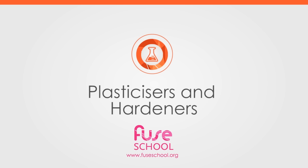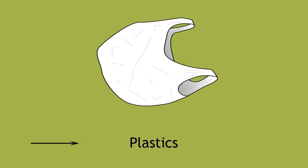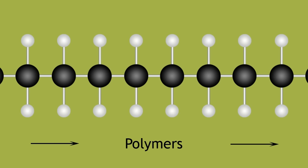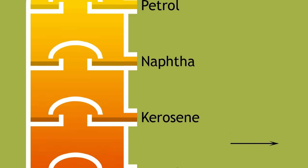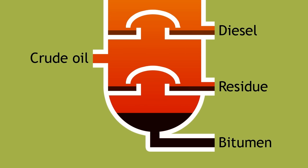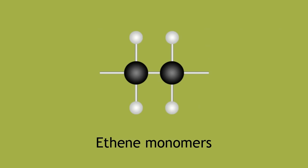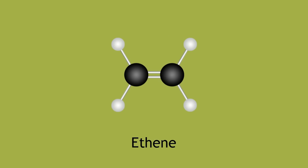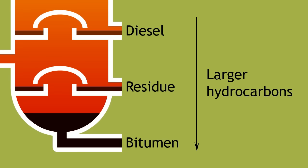In this lesson, we will learn about plasticizers and hardeners. You may be familiar with the term plastics to describe a very broad range of polymers, all derived from the products obtained from the fractional distillation of crude oil. For example, polyethene is a polymer of ethene monomers. Ethene is one of the products obtained from the cracking of larger hydrocarbons, which are obtained from the fractional distillation process.